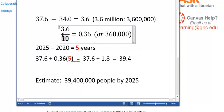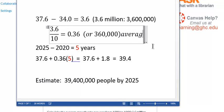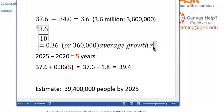Then we take that and divide by 10 to get 0.36. This is our average growth rate.